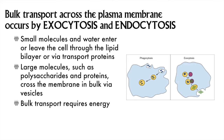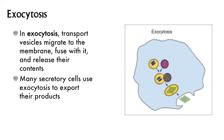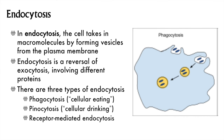Exocytosis is moving large molecules outside the cell and endocytosis is moving large molecules in. We've seen exocytosis before — as cells secrete hormones, for example, they pack vesicles full of large molecules and then fuse them to the plasma membrane. We've also had a taste of endocytosis, such as the process of forming a food vacuole that can fuse to lysosomes.